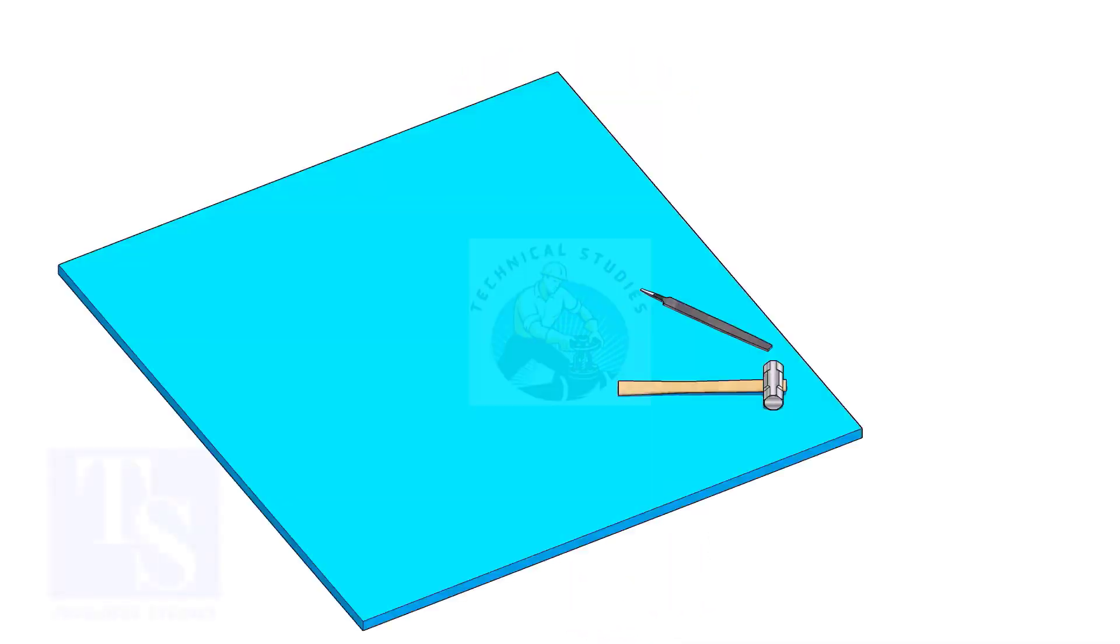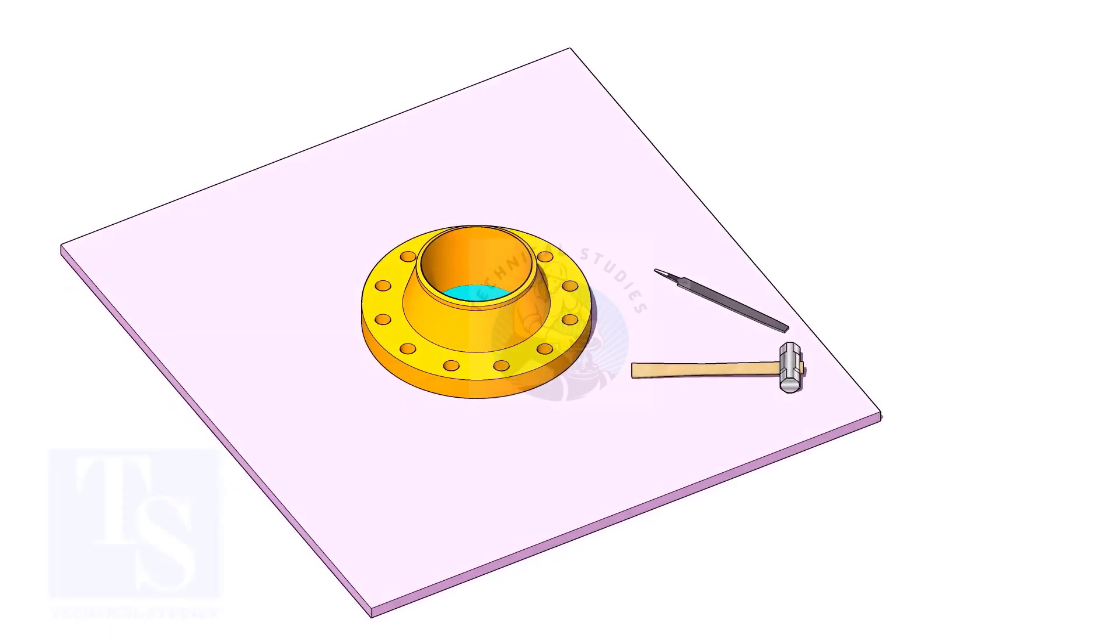The flange face may get damaged during fabrication. Use a non-metallic sheet like a Teflon sheet, thin hardboard, or piece of CNAF gasket sheet, as shown in the video. Use small wedges to level the flange.